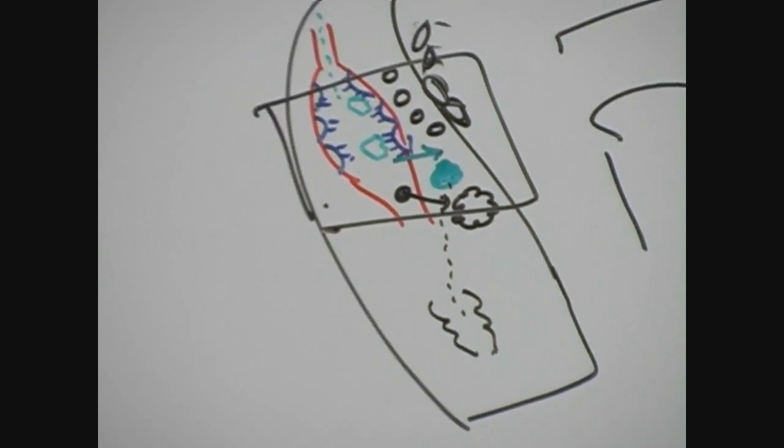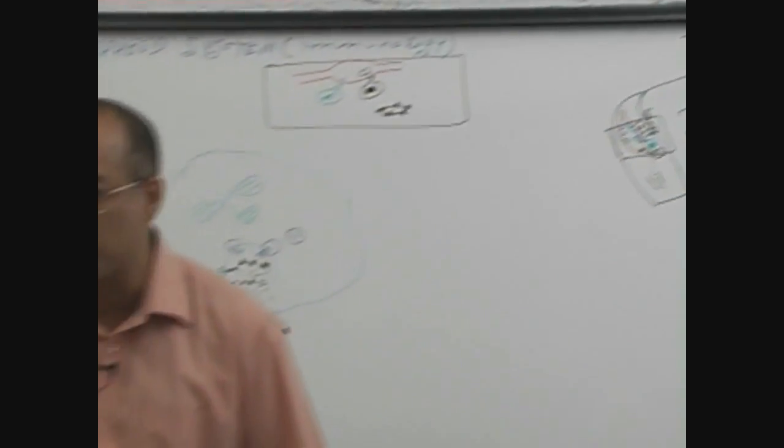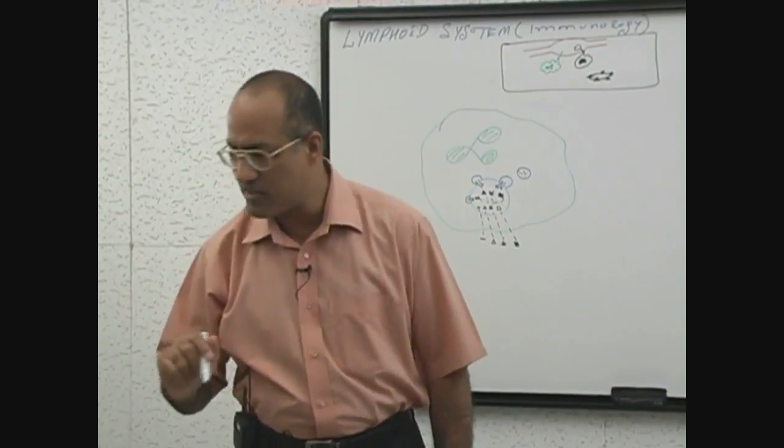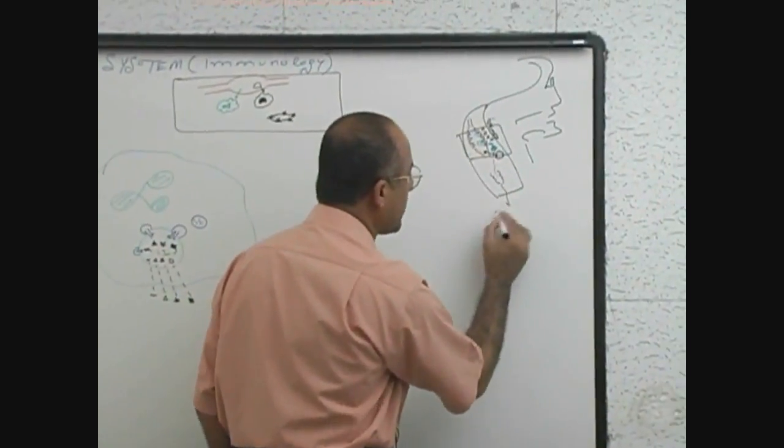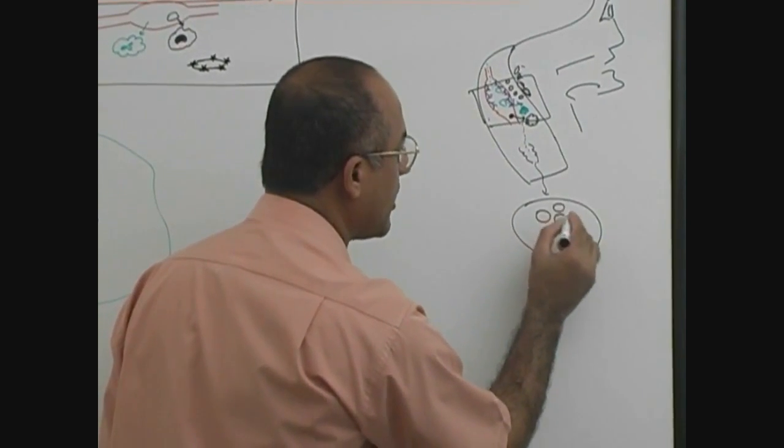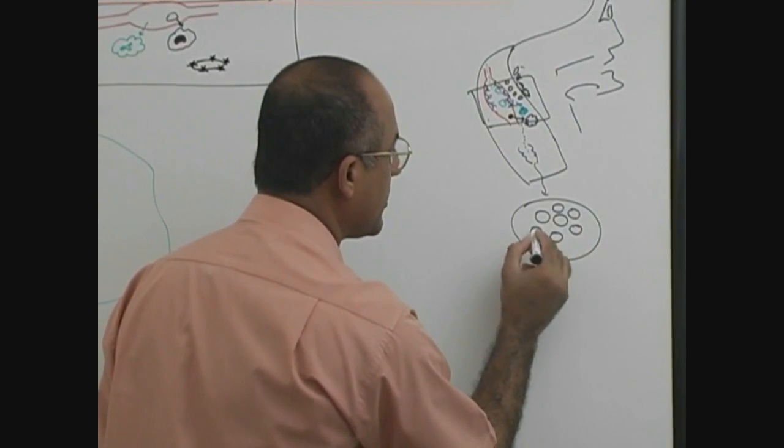What is this? Lymphatics. In this area there must be lymphatics. So bacterial antigens will move through the lymphatics. And somewhere down they will drain into lymph node where there are lymphocytes.